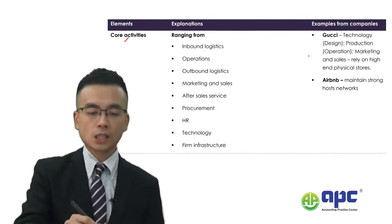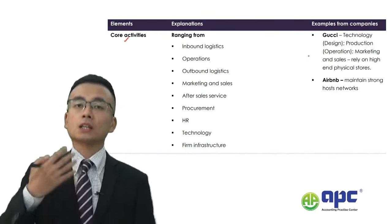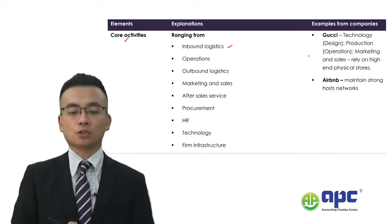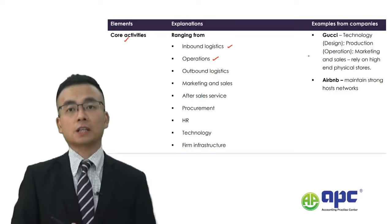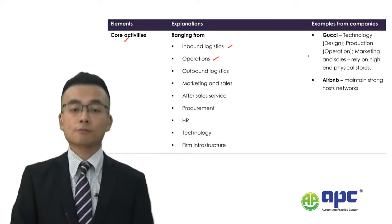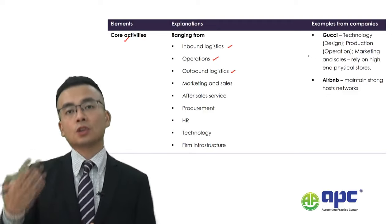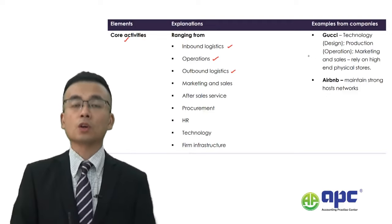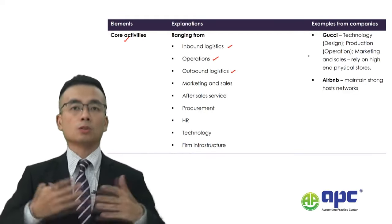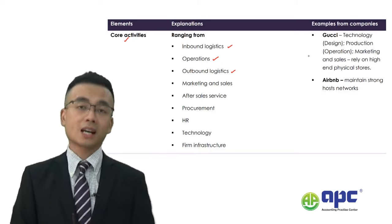The first component is all core activities inside the business. Core activities inside the business cover how you're going to be storing things — which means inbound logistics — how you're going to be manufacturing things, which means the ways you produce the product, perhaps better than your competitors. It also covers how you're going to be distributing things to your customers, whether you deliver goods on time, just-in-time, or whether you're targeting customers in overseas countries.